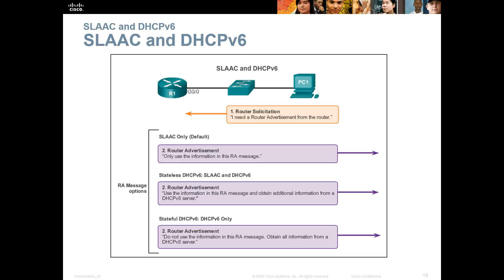The Router Advertisement will carry an RA message with different flags depending on the mode. If stateless DHCPv6, the RA says: 'Use the information in this RA message and obtain additional information from a DHCPv6 server if available.' If stateful, the RA says: 'Do not use the RS information; obtain all information from the DHCPv6 server.' If there's no DHCPv6 server, it will use SLAAC only.